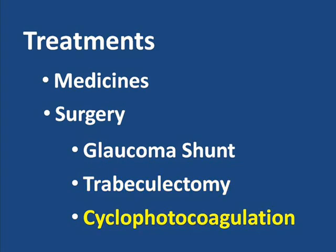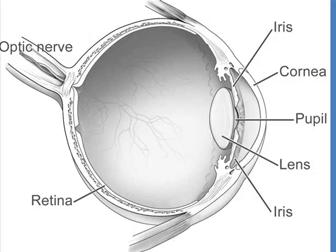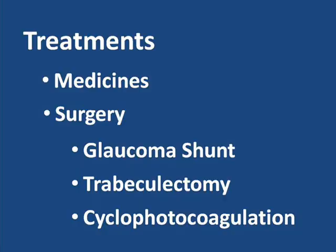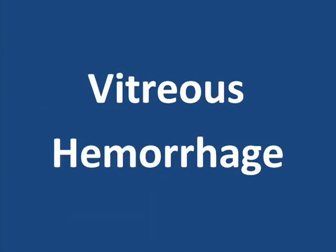When other options fail, a procedure called cyclophotocoagulation may be helpful. In this procedure, a laser is used to damage the structure inside the eye where the aqueous fluid is produced. The idea is to reduce the production of fluid, but not to the point where the eye loses too much internal pressure. These are just a few of the possible treatments, but if left untreated or if the treatments are ultimately unsuccessful, the condition may progress to the point where surgical removal of the eye is warranted.